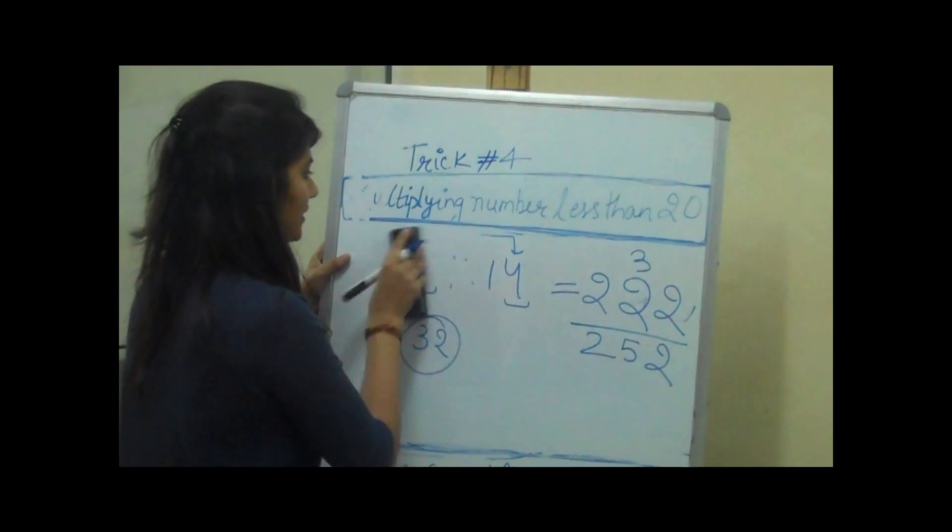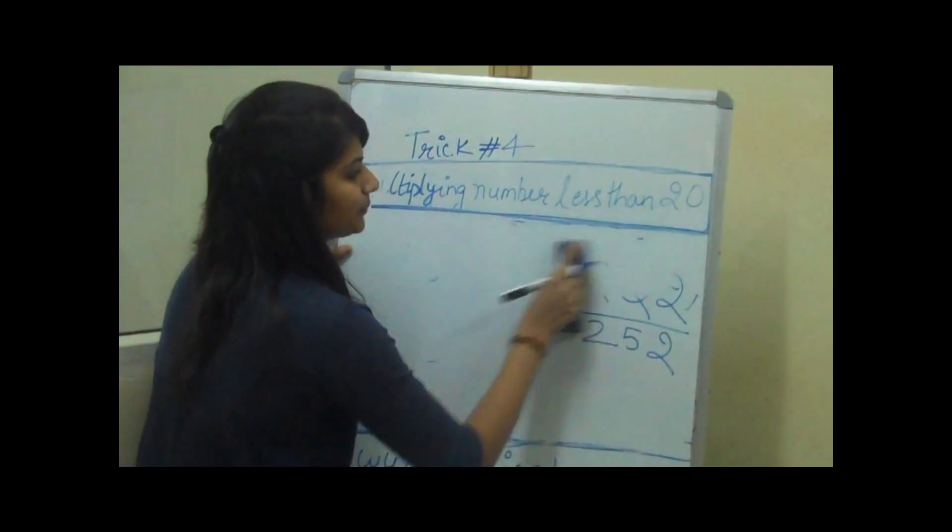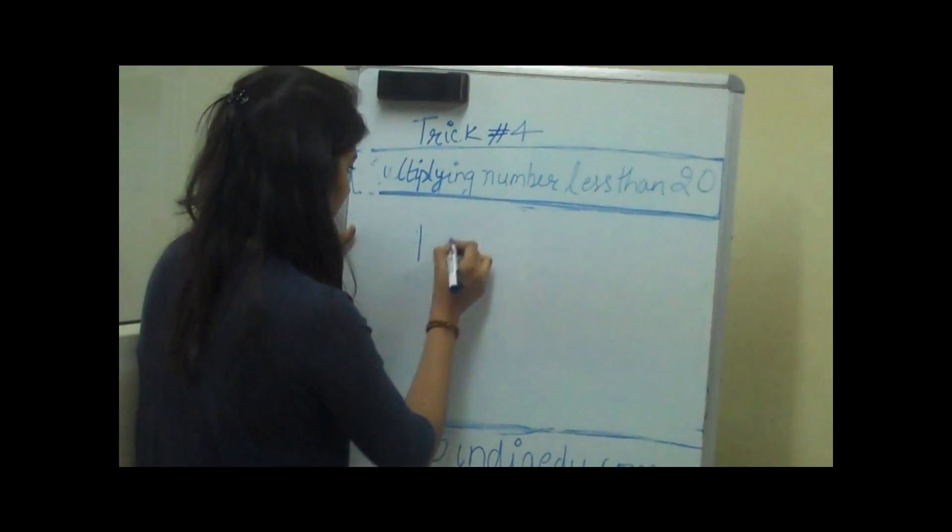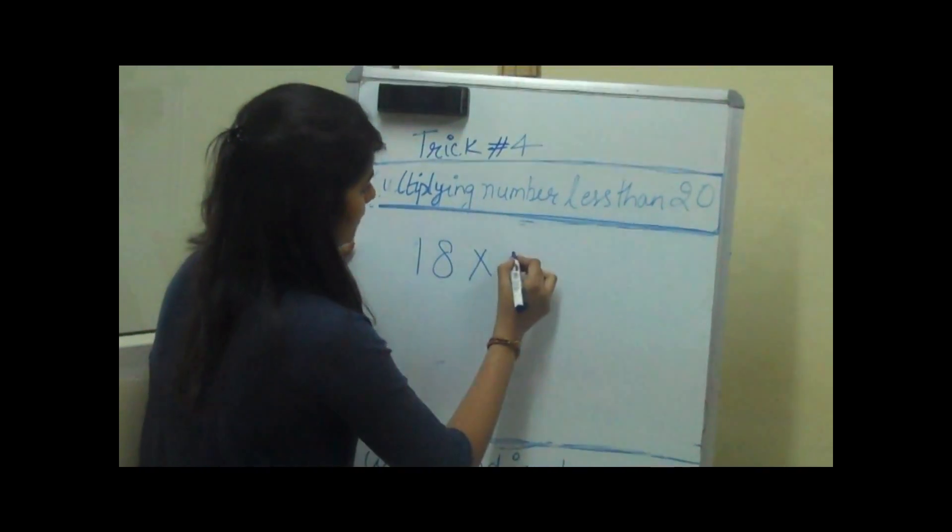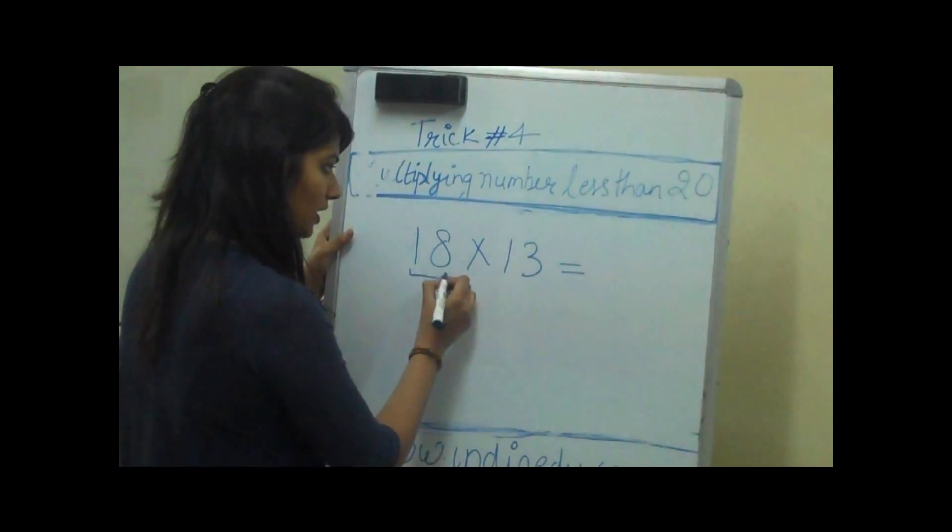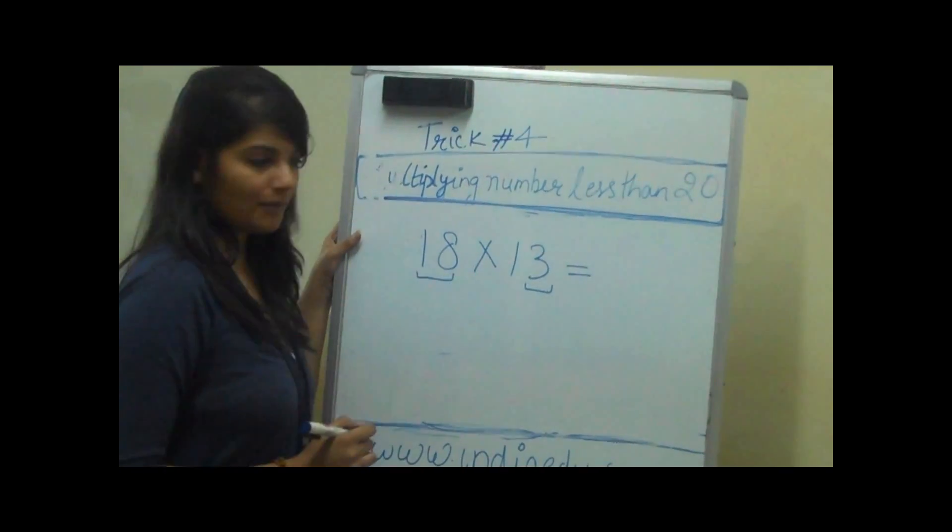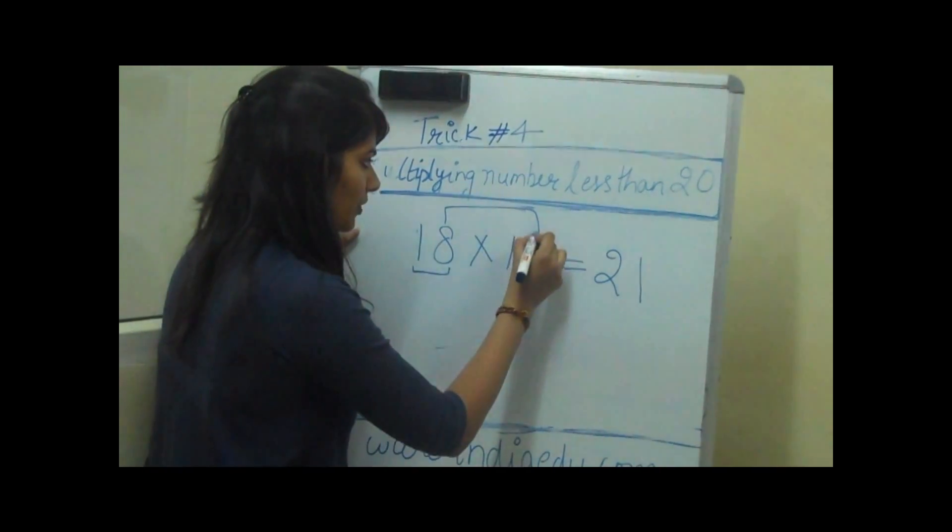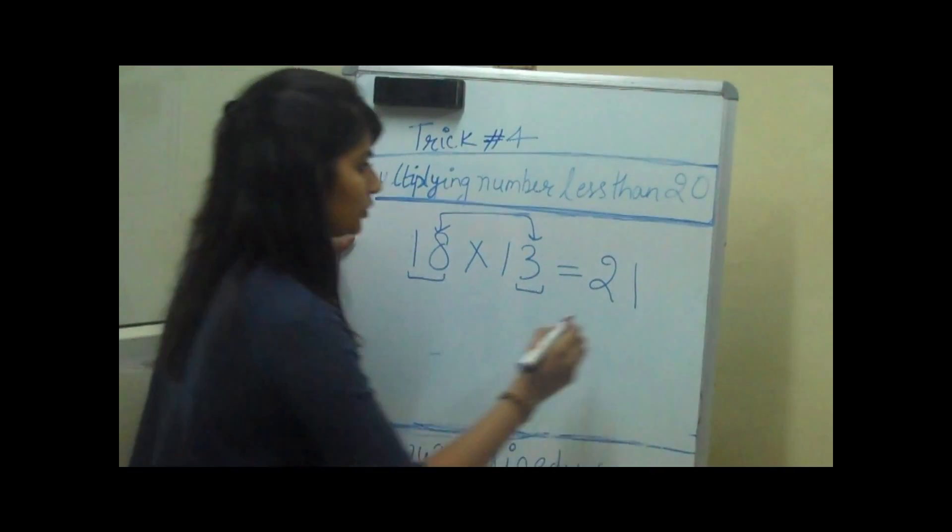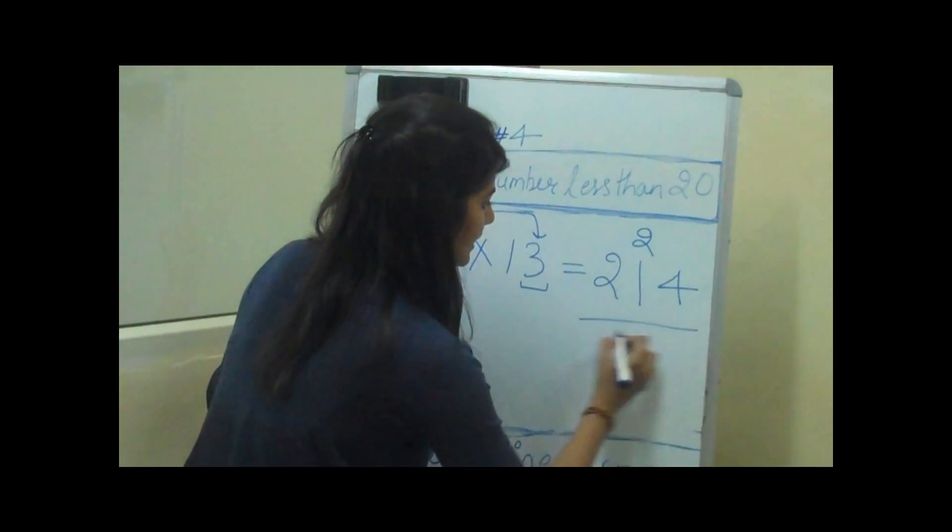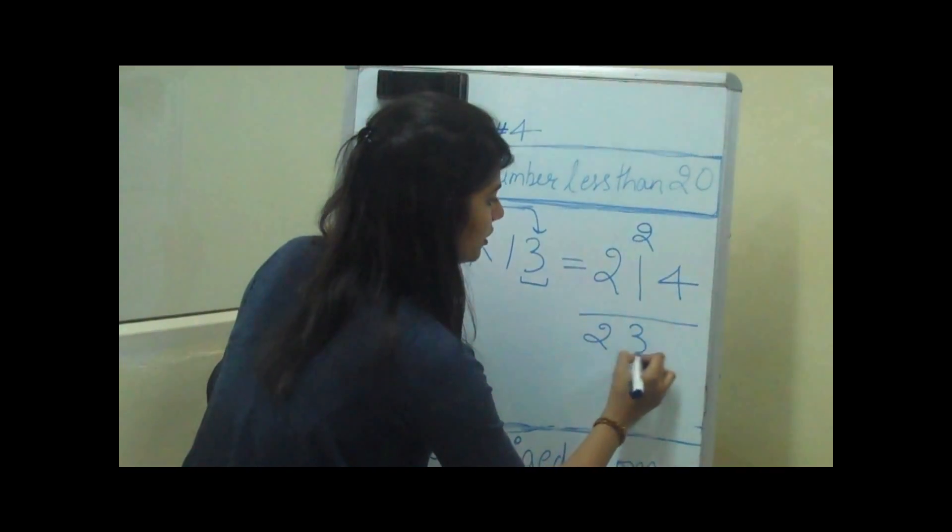Let's take another example and understand this. If we have a number 18 into 13, we will add the number to this number which is 21. So 8 into 3 is 24. So we have a carry over here which is 2 and then we will add it which is 234.